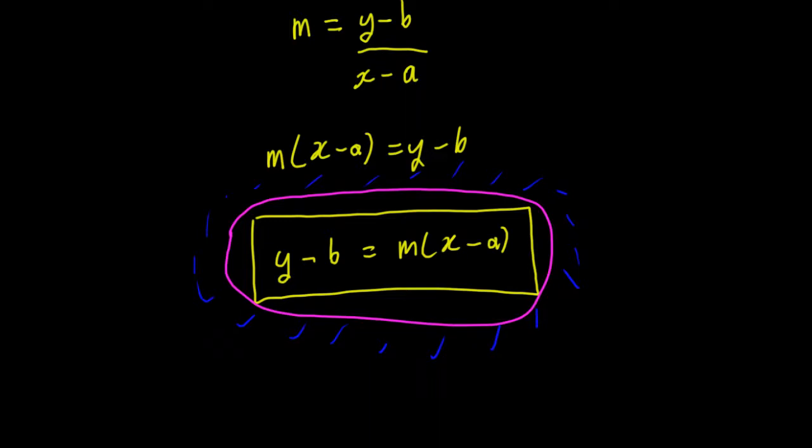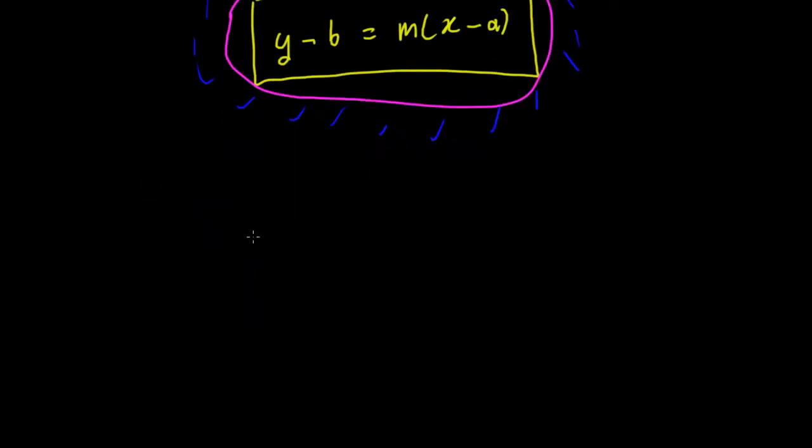So let's look at an example. Let's say we have a question: given the gradient m equals, say, 3, and there's a point on the line, say 2 comma 3, then what is the equation of the line? So you look at that and you're able to say, well, we've got the gradient m and we've got a point 2 comma 3. So the 2 is the a and the 3 is the b.